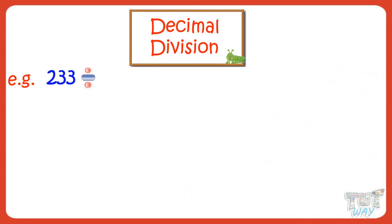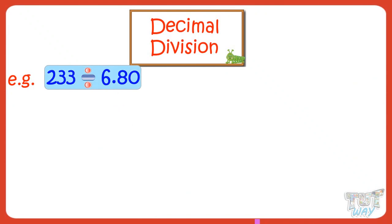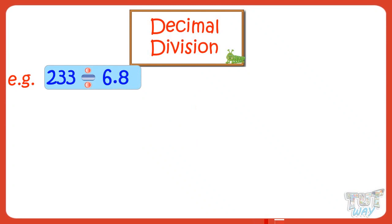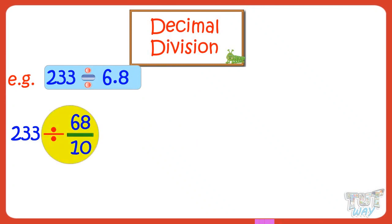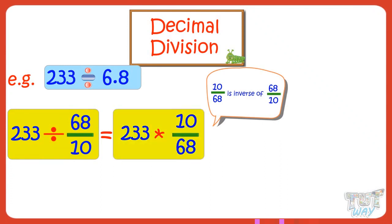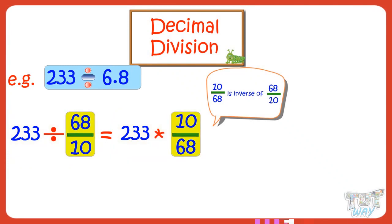We have to divide 233 with 6.80, where 233 is a whole number and 6.80 is a decimal number. We have to divide 233 by 6.80, and 6.80 is the same as 6.8. Dividing by 6.8 is the same as dividing by 68/10. And dividing with a fraction is the same as multiplication with its inverse. That is, dividing 233 by 68/10 is the same as multiplying 233 by 10/68, where 10/68 is the inverse of 68/10.